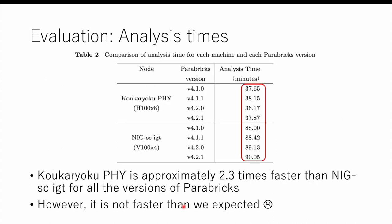Here are the results. This shows the analysis time of KOKAYUKFI for each Parabricks version, and here is the analysis time of the NIG node for each Parabricks version. As you can see, KOKAYUKFI is approximately 2.3 times faster than the NIG node for all versions of Parabricks. However, this is not as fast as expected, because KOKAYUKFI has twice the number of GPUs and each GPU is four times faster than the GPU in the NIG node.